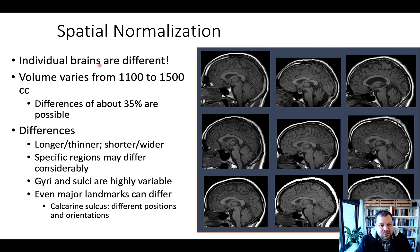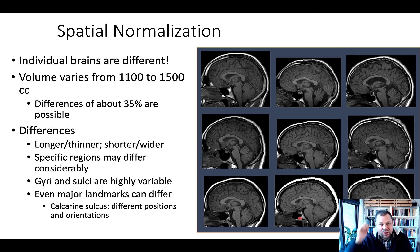The reason why spatial normalization is so important is obviously because brains differ. You have stark differences — for instance, this brain which is large, and this brain which is relatively small, or this brain which may be even smaller. We have gross anatomical differences, but also relatively specific anatomical differences, such as large ventricles here versus very small ventricles. The cerebellum can look very different, and also the cortex with its grooves and ridges — the gyri and sulci look very different across different brains. There's a large gap here, for instance, that doesn't exist in any of the other brains.